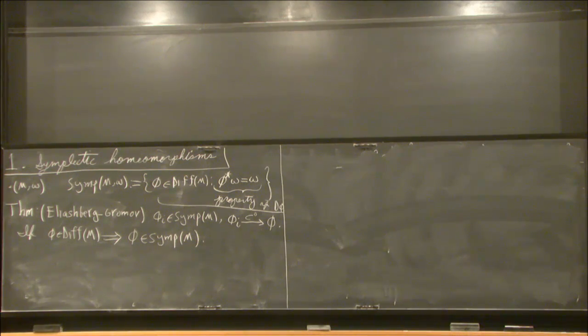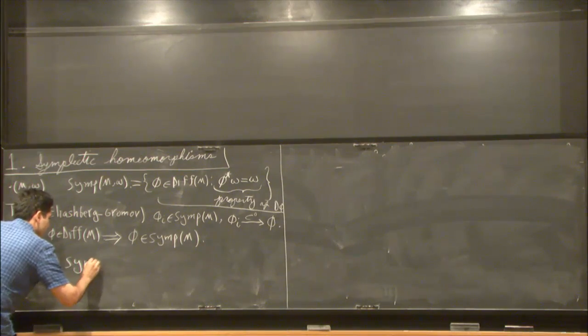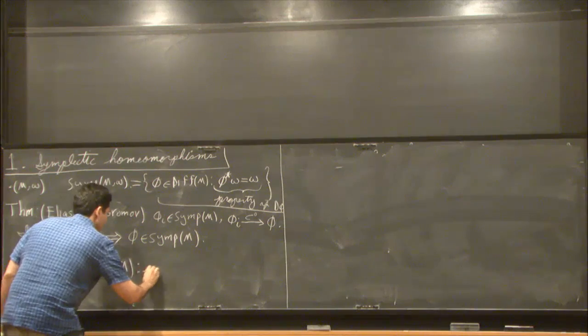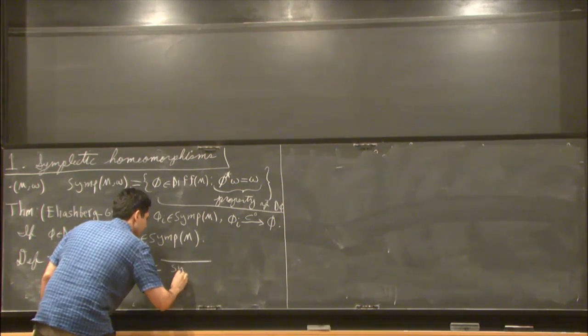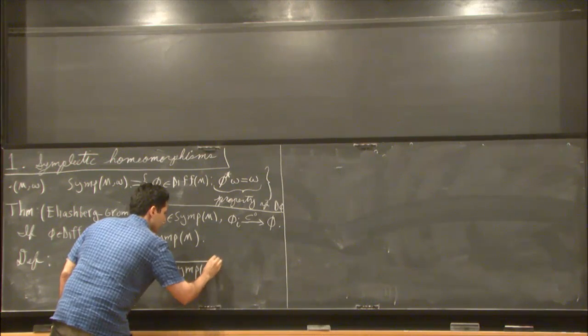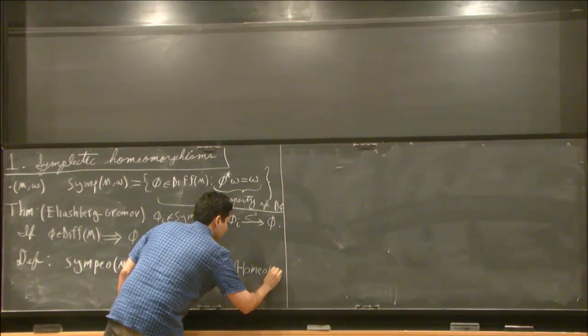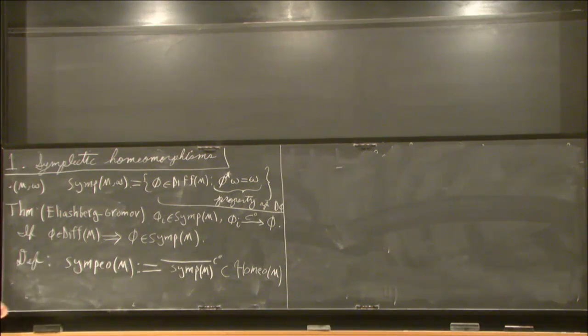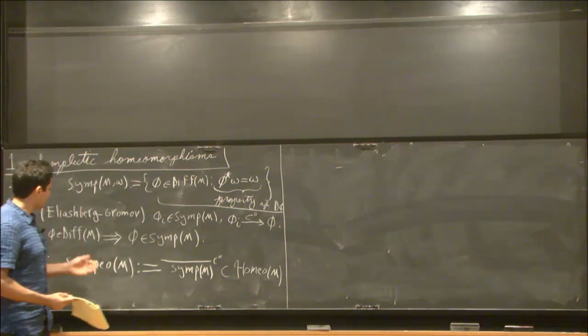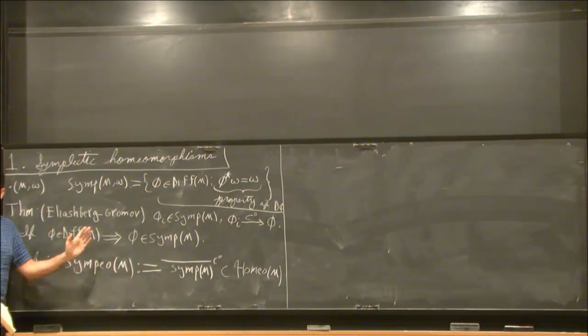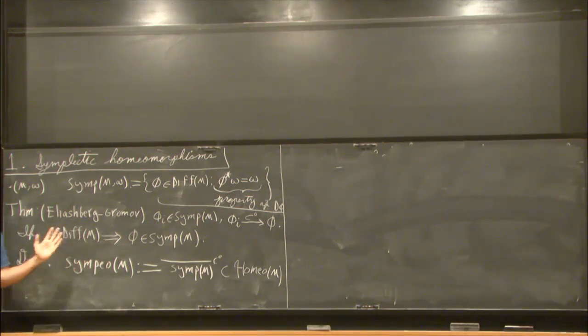And this is exactly what allows us to make sense of the notion of a symplectic homeomorphism. So here's the definition. The set of symplectic homeomorphisms of M, I'll define it to be just what you obtain in the closure of symplectomorphisms. So here I'll take C0 closure, and I'm looking inside homeomorphisms of M. So these are precisely those homeomorphisms which can be obtained in these kinds of limits. And what this theorem says is that if you have a smooth symplectic homeomorphism, then it's automatically a symplectic diffeomorphism. So the definition kind of makes sense.